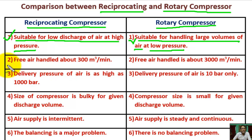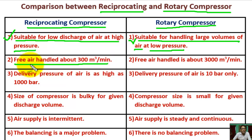Point 2: For reciprocating compressor, the free air handled is about 300 cubic meters per minute. For rotary compressor, the maximum free air discharge can also be as high as 300 cubic meters per minute.